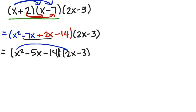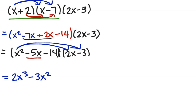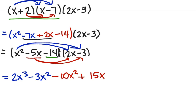Now we distribute again, starting with x squared. x squared times 2x is 2x cubed; x squared times negative 3 is negative 3x squared. Distributing negative 5x — don't forget that minus sign — negative 5x times 2x is negative 10x squared; negative 5x times negative 3 is positive 15x. Finally, distributing negative 14: negative 14 times 2x is negative 28x, and negative 14 times negative 3 is positive 42.